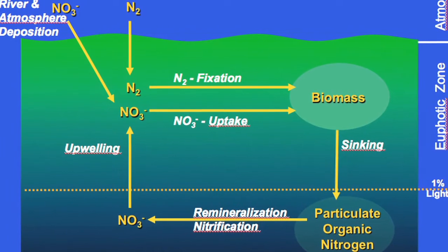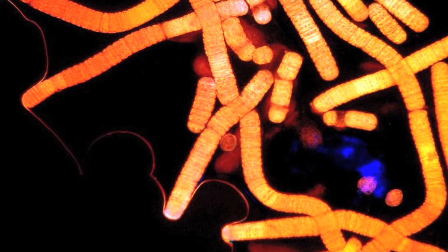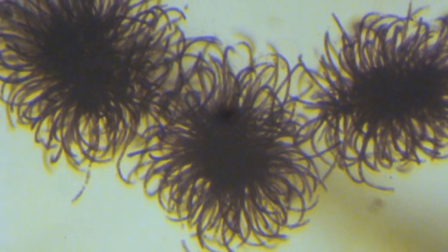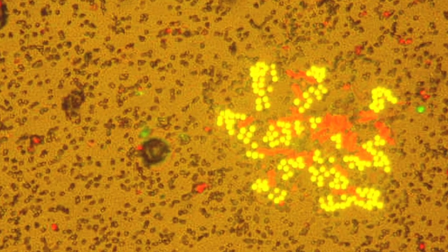And thereby that nitrogen is available in dissolved form to other phytoplankton. And on a global scale, these organisms have an immense effect because all the nitrogen they fix is actually more than all the nitrogen that gets introduced to the ocean by all the rivers of the world combined. So a huge impact.